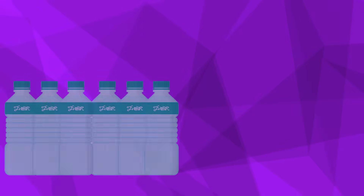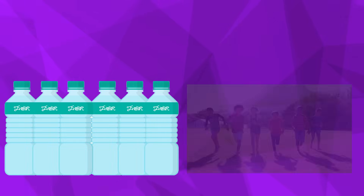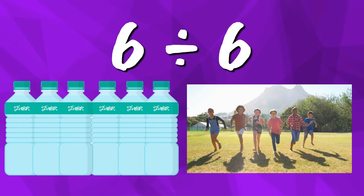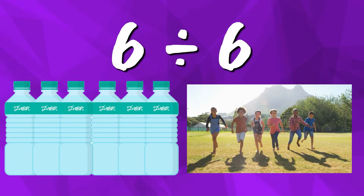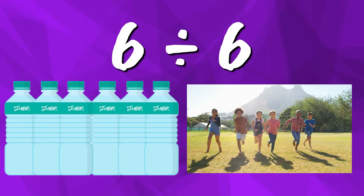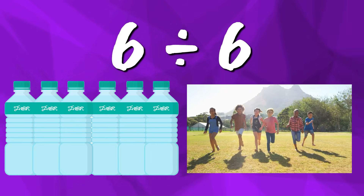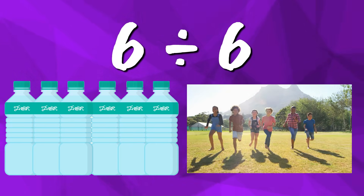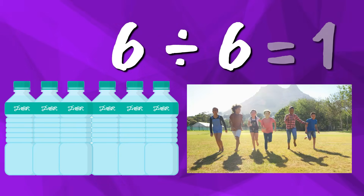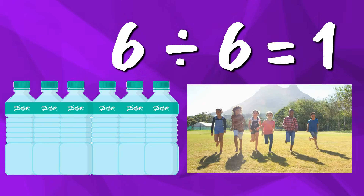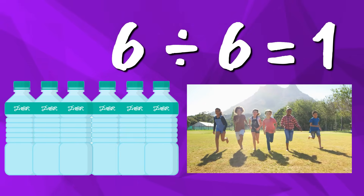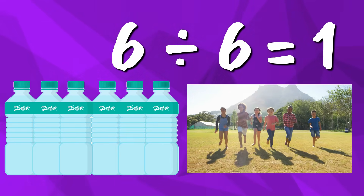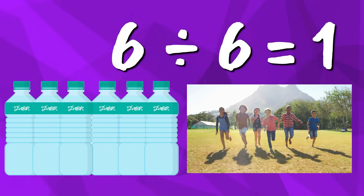Let's say there are six bottles of water, and there are six kids playing outside. That would be six divided by six. If we split the six bottles by six, how many water bottles does each kid get? One. Great job. Six divided by six equals one. Everyone gets one water bottle.